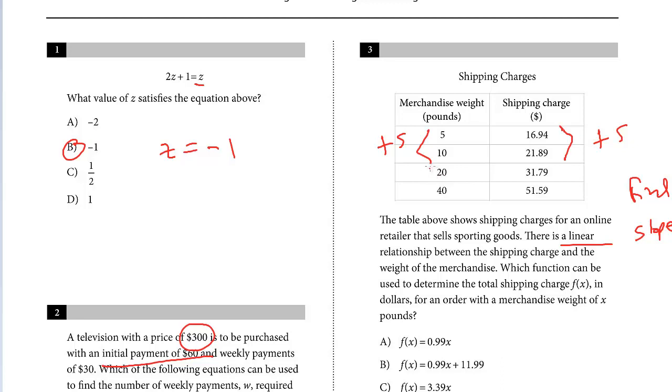To confirm, look at the next difference. From 5 to 10 pounds isn't an increase of 5—it's 10 pounds. From $22 to $32 is an increase of $10. So you should recognize the slope is very close to 1.